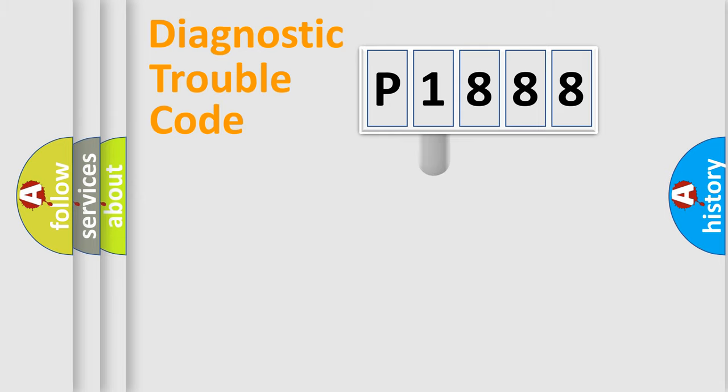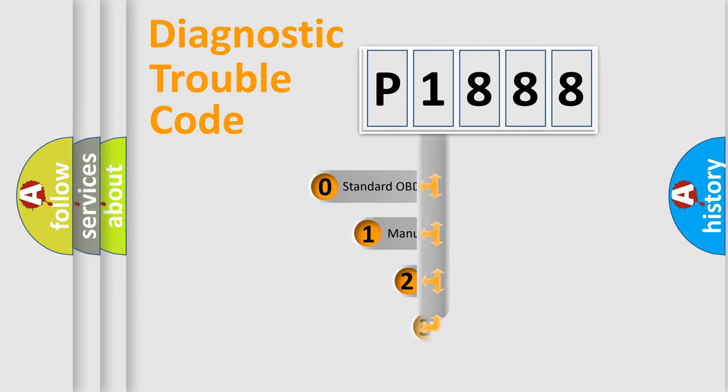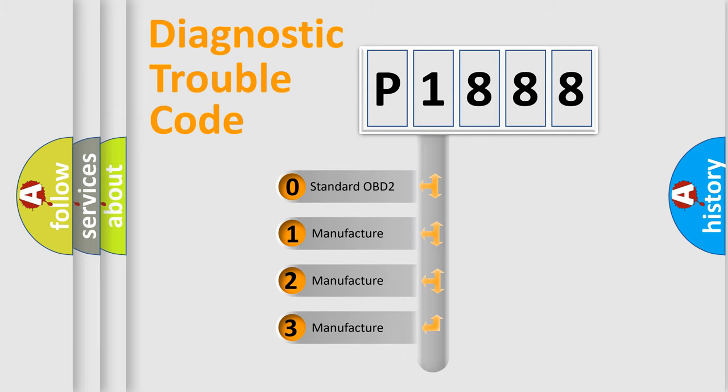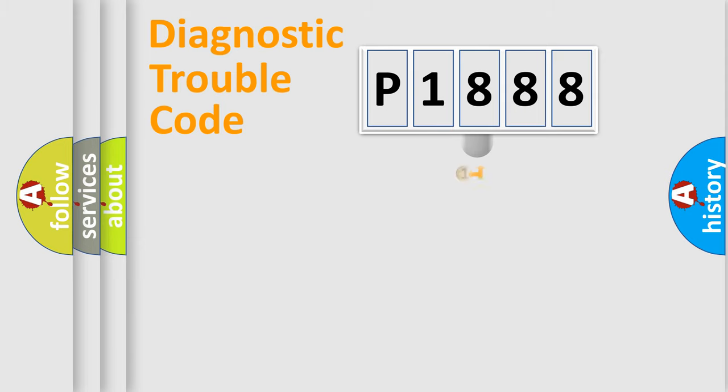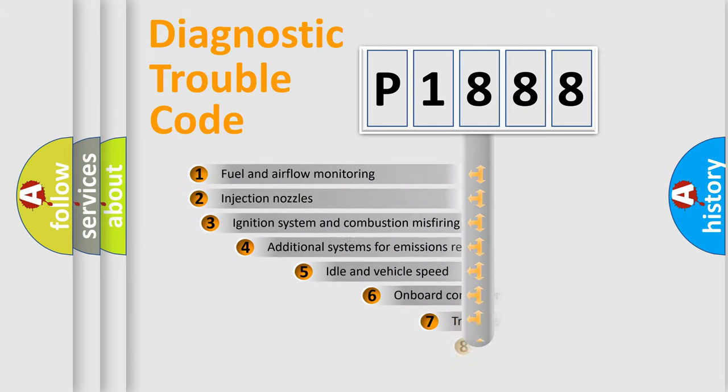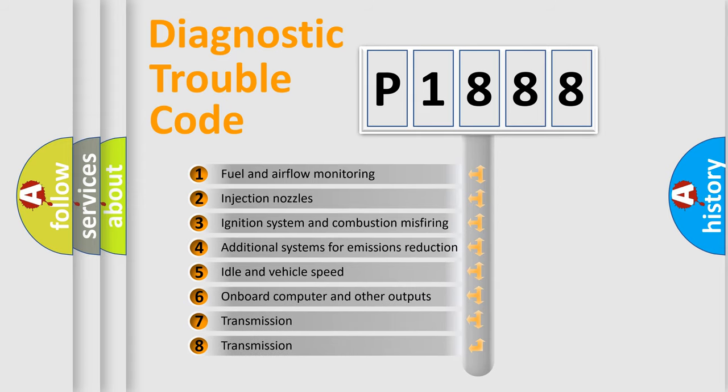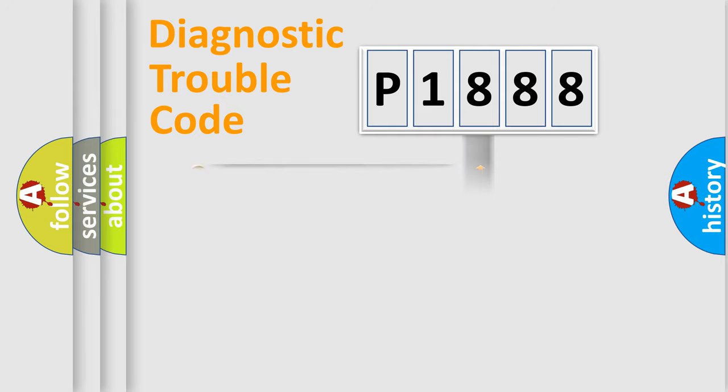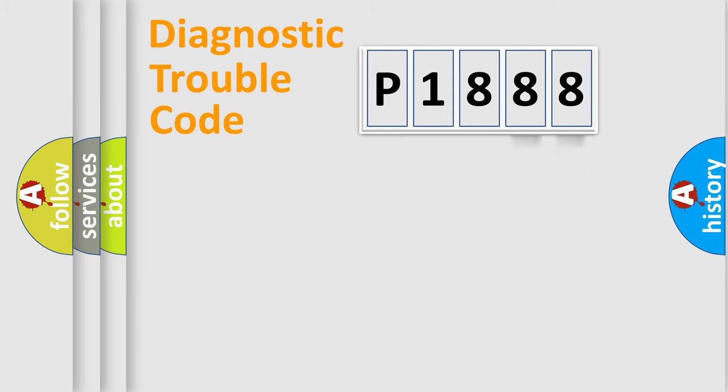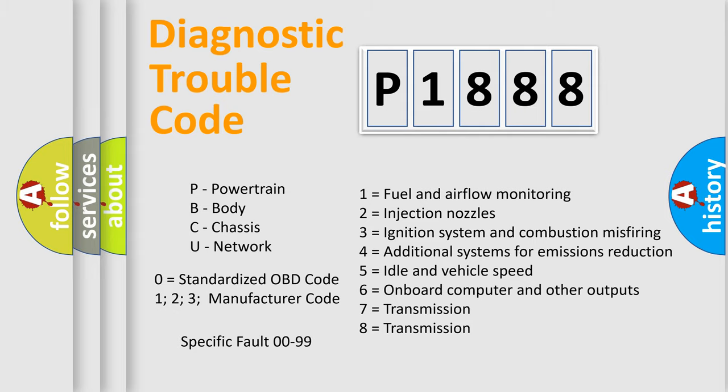This distribution is defined in the first character code. If the second character is expressed as zero, it is a standardized error. In the case of numbers 1, 2, 3, it is a car-specific error. The third character specifies a subset of errors. The distribution shown is valid only for the standardized DTC code. Only the last two characters define the specific fault of the group. Let's not forget that such a division is valid only if the second character code is expressed by the number zero.